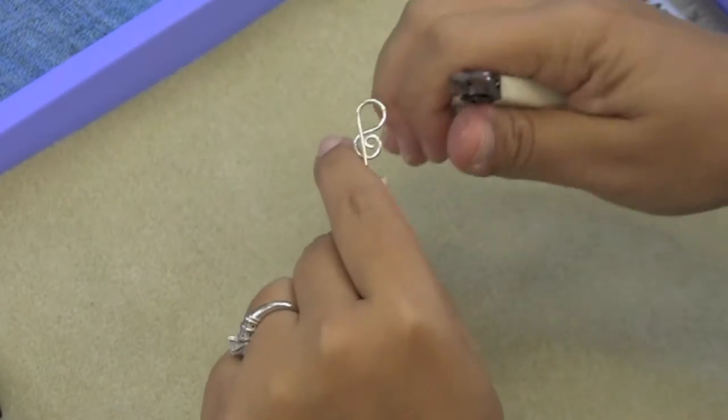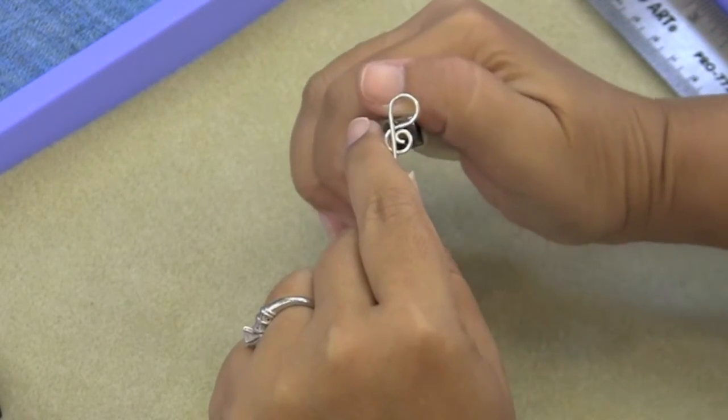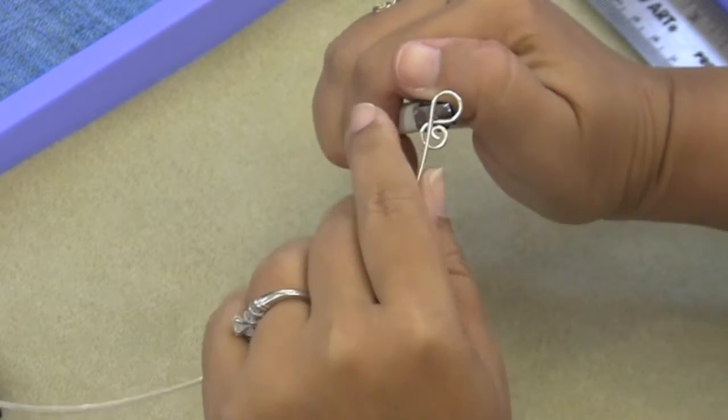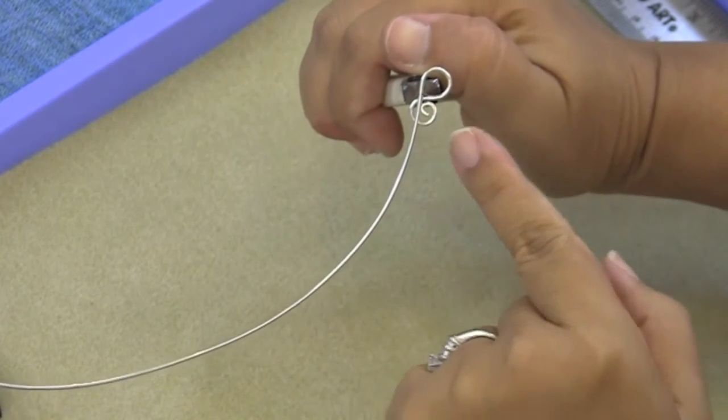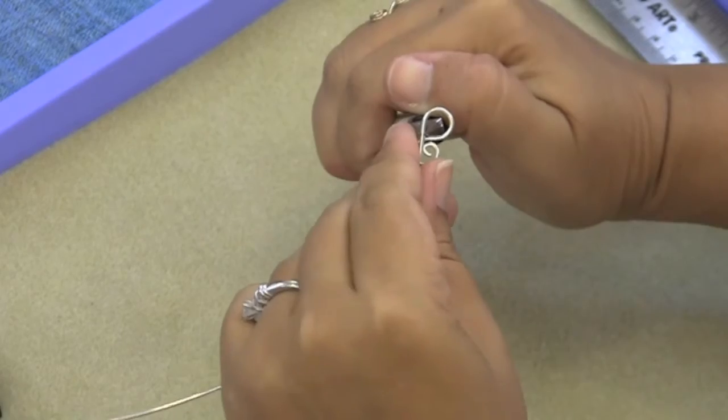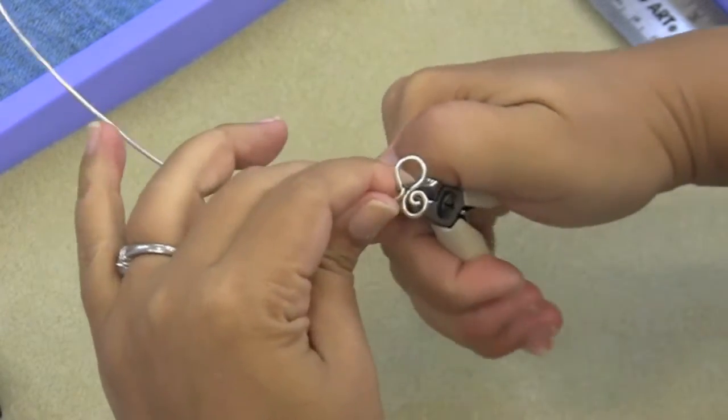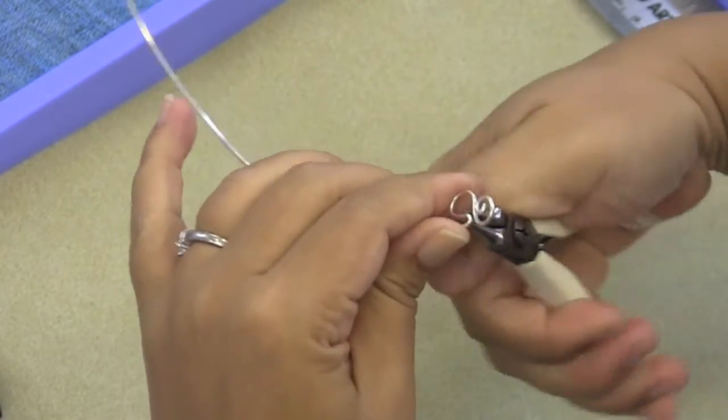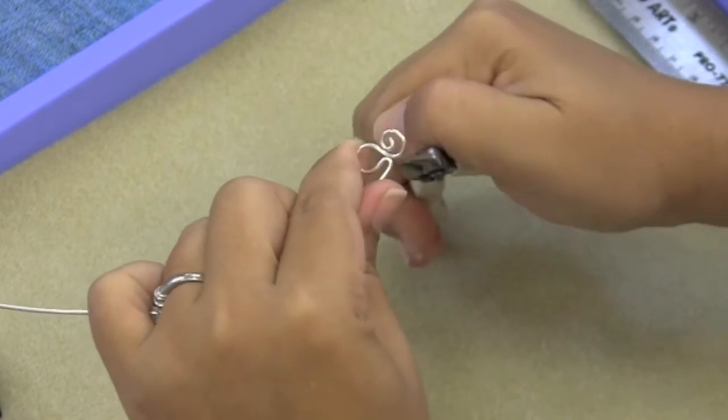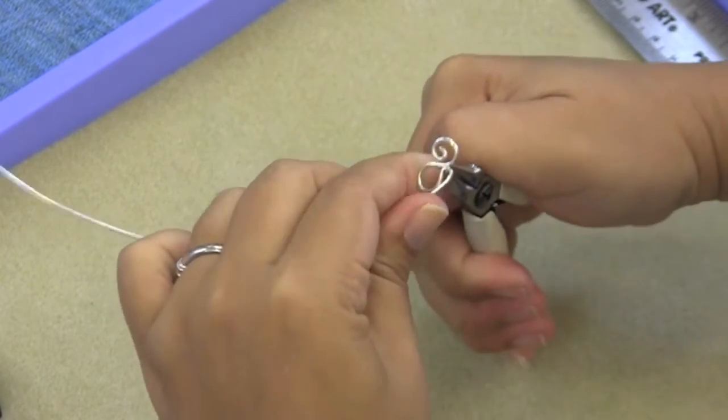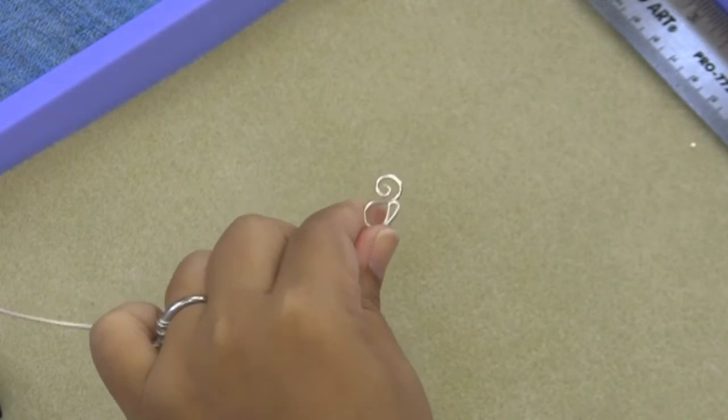I'm going to pick up my round nose plier again and put it into my hook kind of where the wire overlaps the spiral and I'm going to push the wire away from me to start my bend that becomes the tip of my hook.